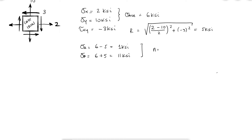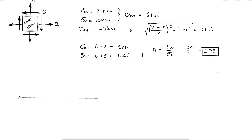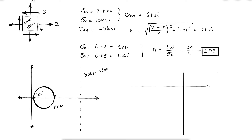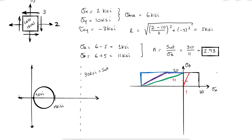The factor of safety in this case would be 30 divided by 11. However, let's take a look at the Mohr circle and the stress envelope. Regardless of the failure criterion I'm using, the factor of safety is this distance over this distance, which is the same as 30 over 11.